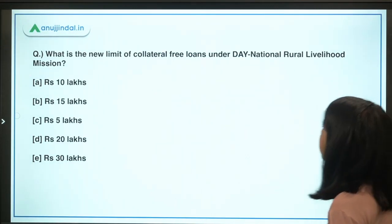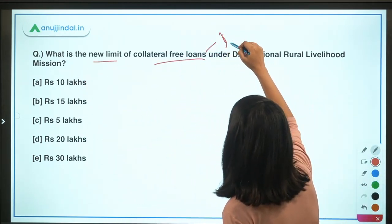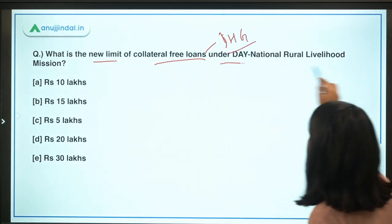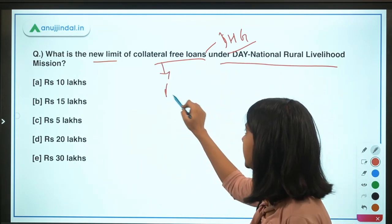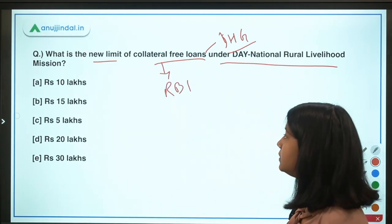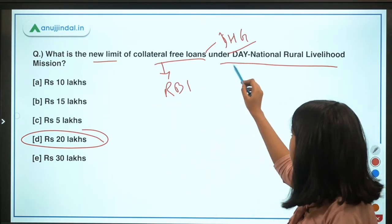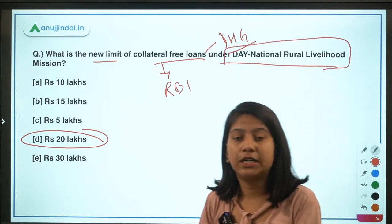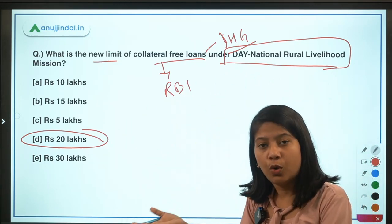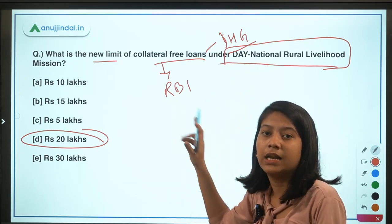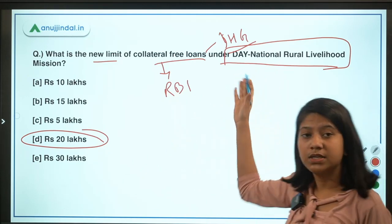What is the new limit of collateral-free loans given to self-help groups under the DAY National Rural Livelihood Mission? RBI has recently raised this limit from 10 lakhs to 20 lakhs. For a comprehensive understanding of this scheme, refer to the detailed session on DAY-NRLM by faculty member Manish Mishra.